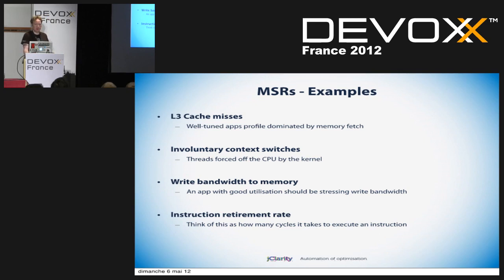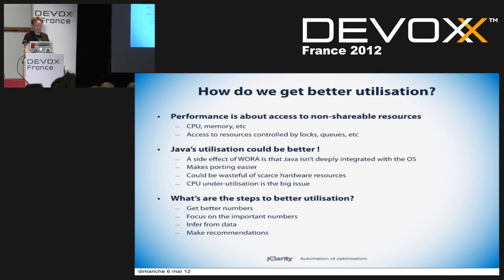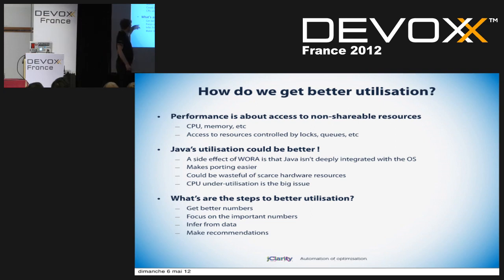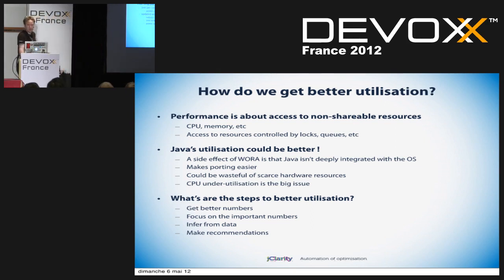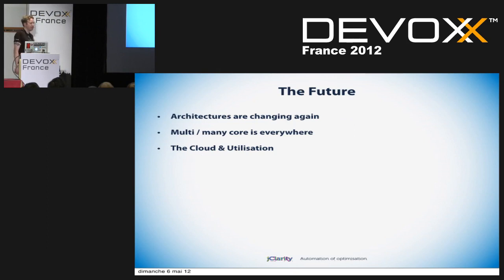So that's where we are — the state-of-the-art is these model-specific registers. We still need to do more to infer and make recommendations, but that's where we've reached so far. Let's talk about the future — the future has some interesting things in it. Architecture is changing again. We've lived essentially in an Intel monoculture for the last 10 or 15 years, and that's coming to an end.